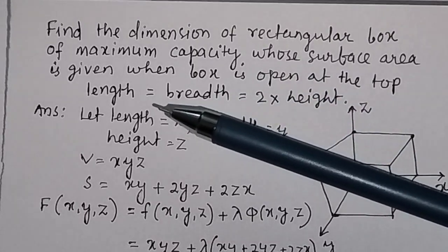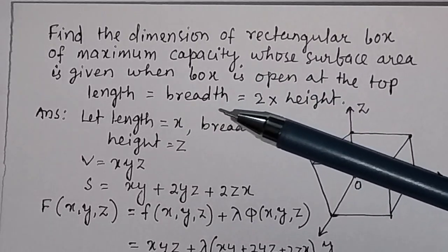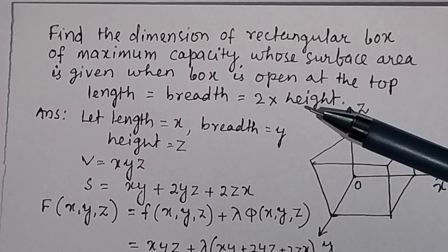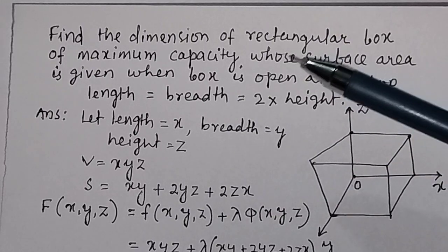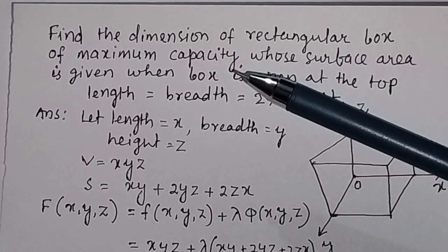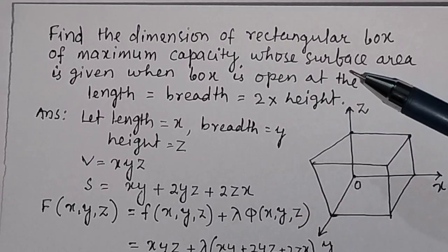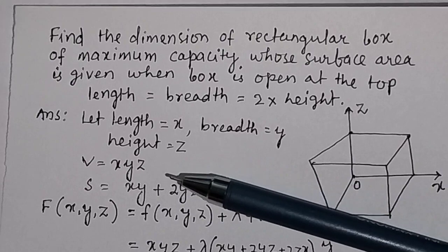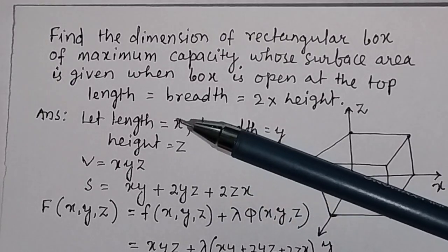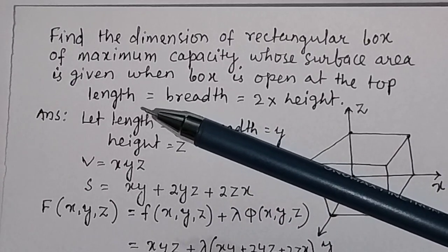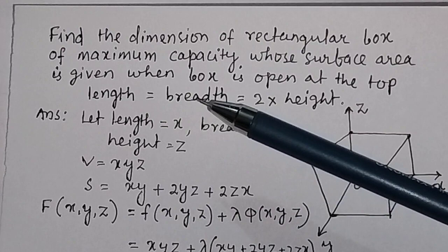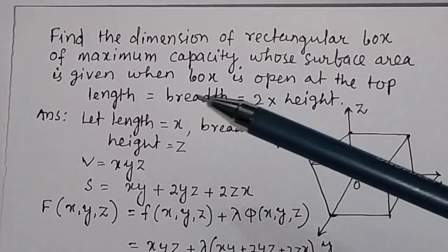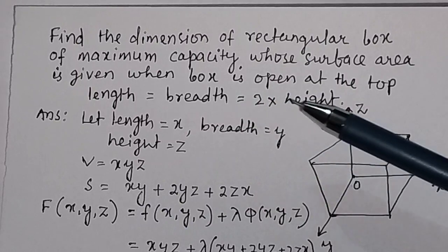We have to prove that length is equal to breadth is equal to 2 into height. If you are given a rectangular box of maximum capacity whose surface area is given, then you have to prove that length is equal to breadth is equal to 2 into height — that means x is equal to y is equal to 2z.